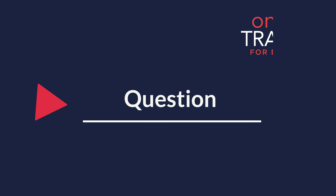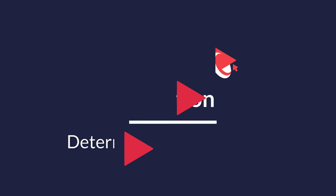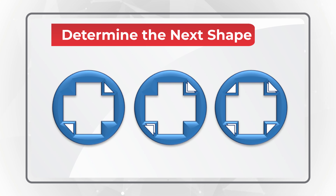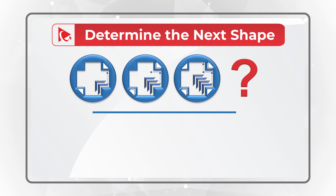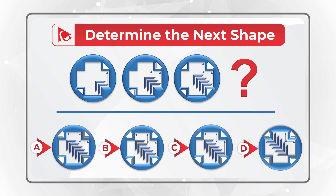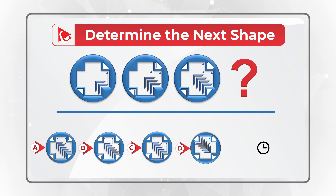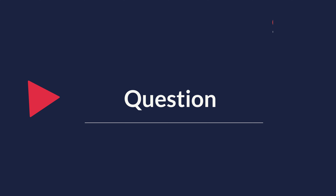The correct answer is choice A: 9. What's interesting is that there are many ways to get the wrong answer — if you forget to divide by 2, there's a choice for that; if you miss the negative number and forget to divide by 2, there's a choice for that too; and if you just forget the negative number, there's a choice for that as well. This means you must read instructions carefully.